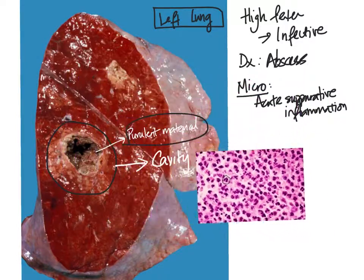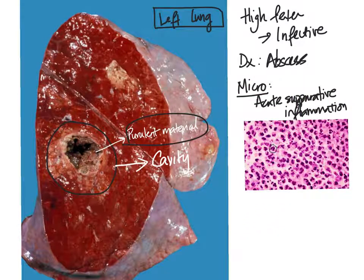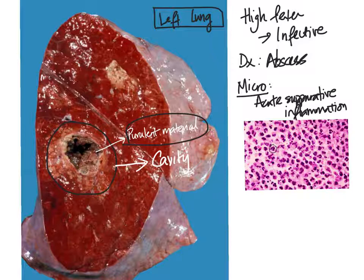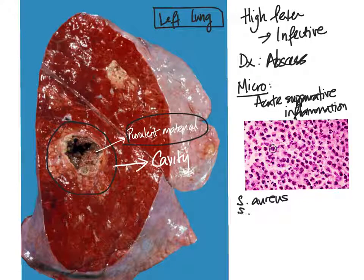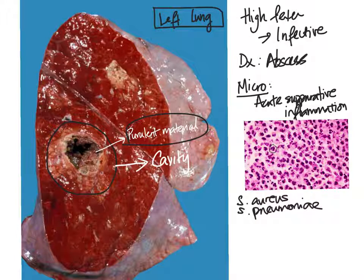In addition to neutrophils, the other components of acute suppurative inflammation would also include necrotic material from our own dead cells. And sometimes we may also see bacterial organisms, which are the cause of acute suppurative inflammation in this case. Some specific bacteria that cause this include Staphylococcus aureus and Streptococcus pneumoniae, and you can see other examples from your textbooks and notes.